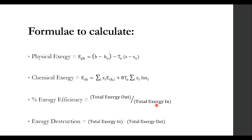Physical exergy is calculated as (H − H₀) − T₀(S − S₀), where H represents the enthalpy of the stream at the given condition and H₀ is the enthalpy at the reference condition. The reference conditions are 298.15 K (25°C) and 1 atm. S similarly represents entropy. For chemical exergy, the formula uses a summation over all components in the system. We will start today with a very simple example with one component, but with more than one component we must use this summation.